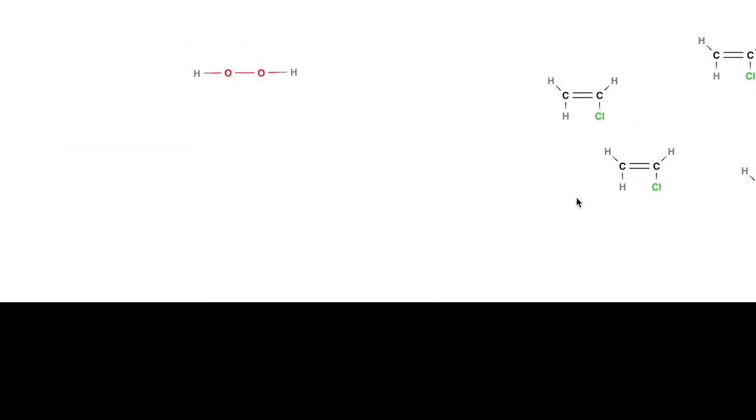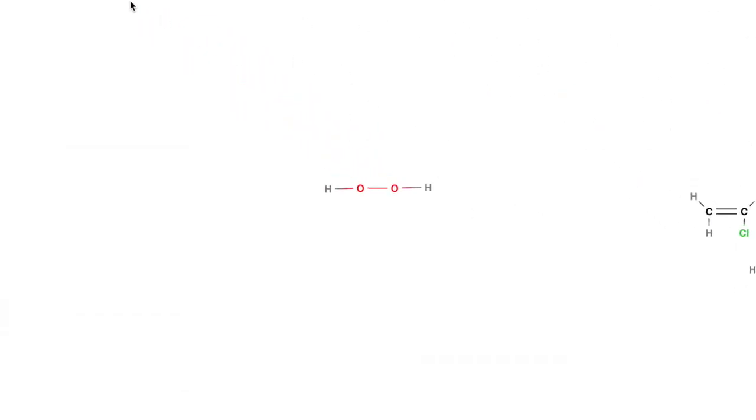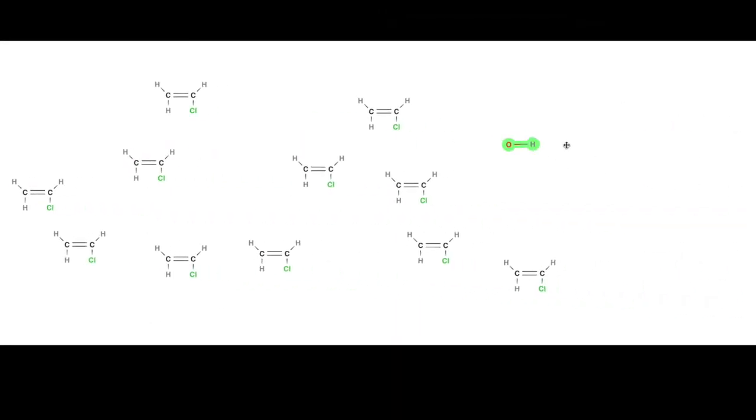Now if we expose the initiator to ultraviolet light, the bond between the two oxygen atoms will be broken, creating two free radicals. This is due to the fact that both oxygen atoms have an unpaired outer shell electron.